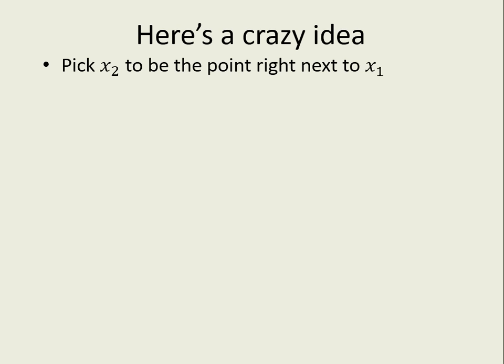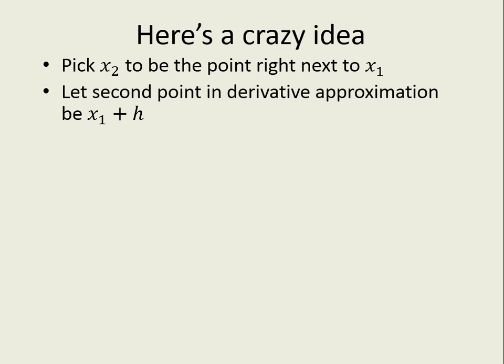Here's the crazy idea: what if our second point was right next to the first one? For finite difference, we let the second point be x1 plus h, therefore we only need one point. And we'll let h be some very small number, usually it's about 10 to the minus 4.